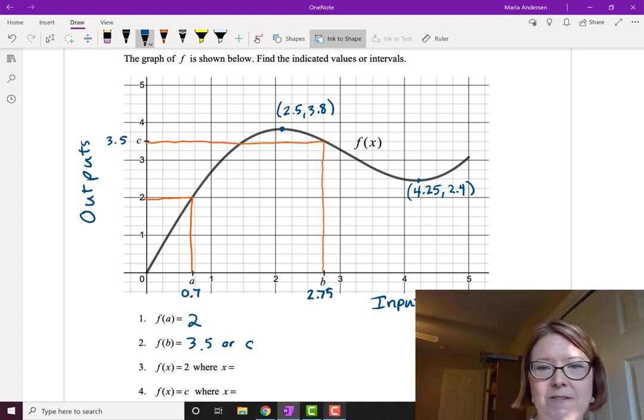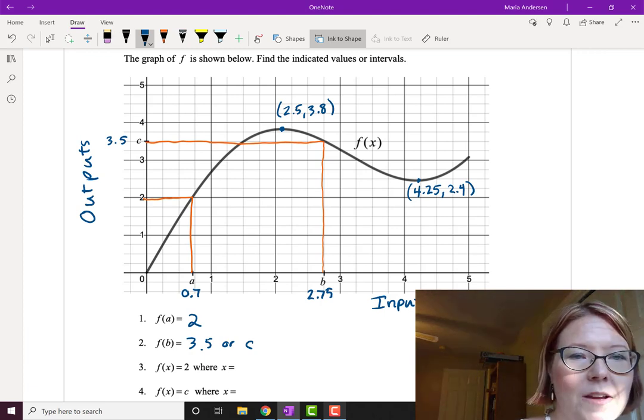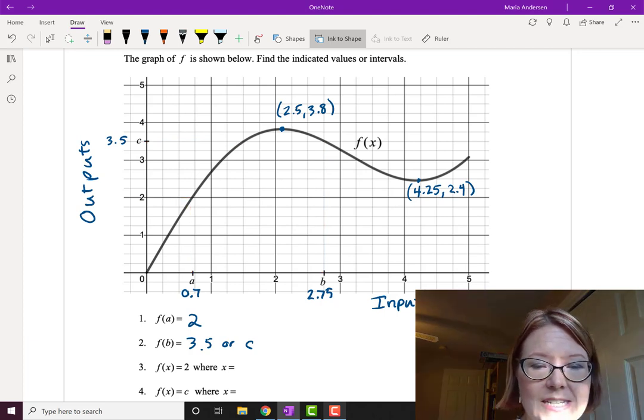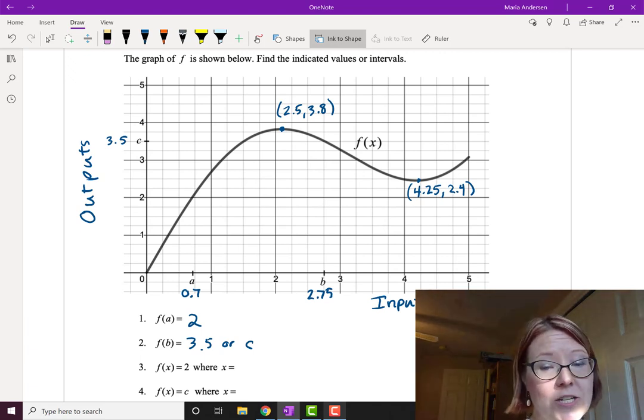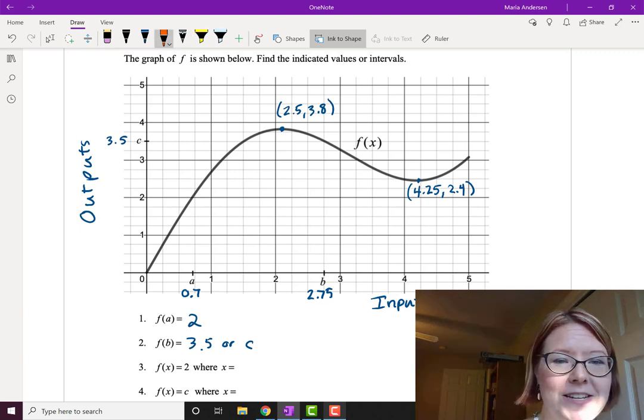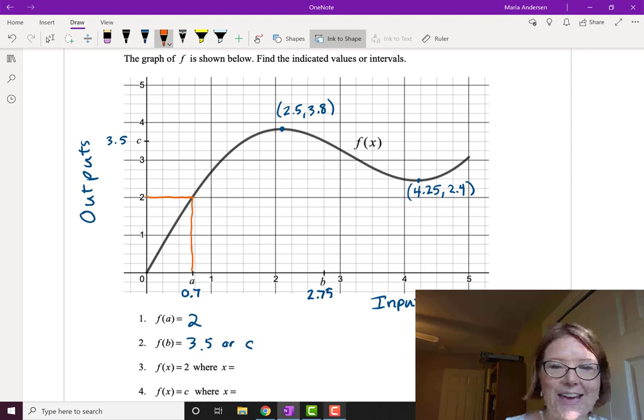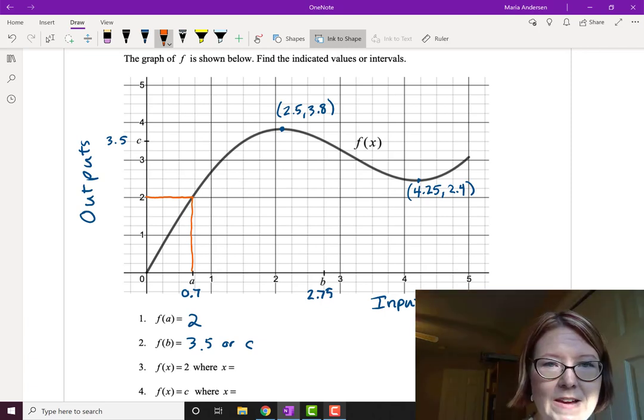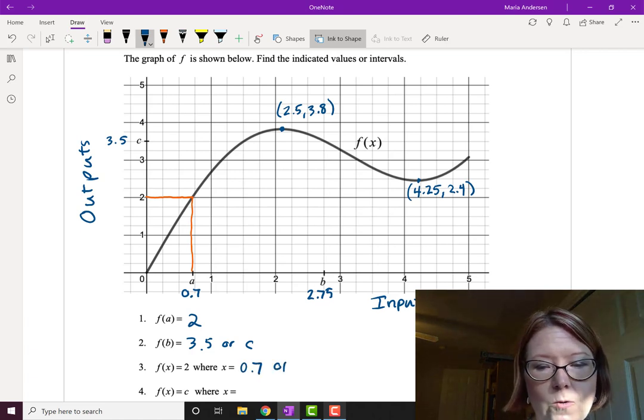Now we'll do this in reverse. So I'm going to erase those two lines so they don't confuse us. And now we're being asked f of x equals 2 where x equals what? So now the output is 2 and the question is what is the input? So if the output is 2, I'm going to start at 2 on the y-axis and move over till I hit that graph of f and then take that down to the x-axis. You'll see that we actually get back to that value of a or 0.7. So f of x equals 2 where x equals 0.7 or a.